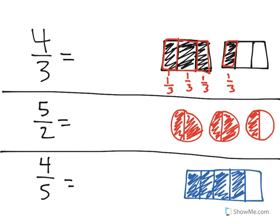So while we do say that 4/3 is equal to 4/3, we could also say that it is equal to 4 groups of 1/3.